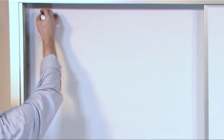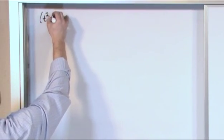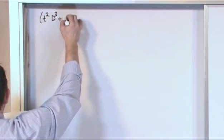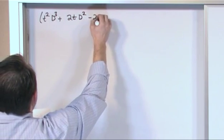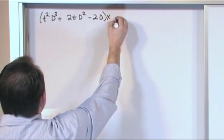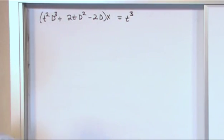So the equation that we're given is the following: t squared times the third derivative plus 2t times the second derivative minus 2 times the first derivative operating on x is equal to t cubed. That is the equation.